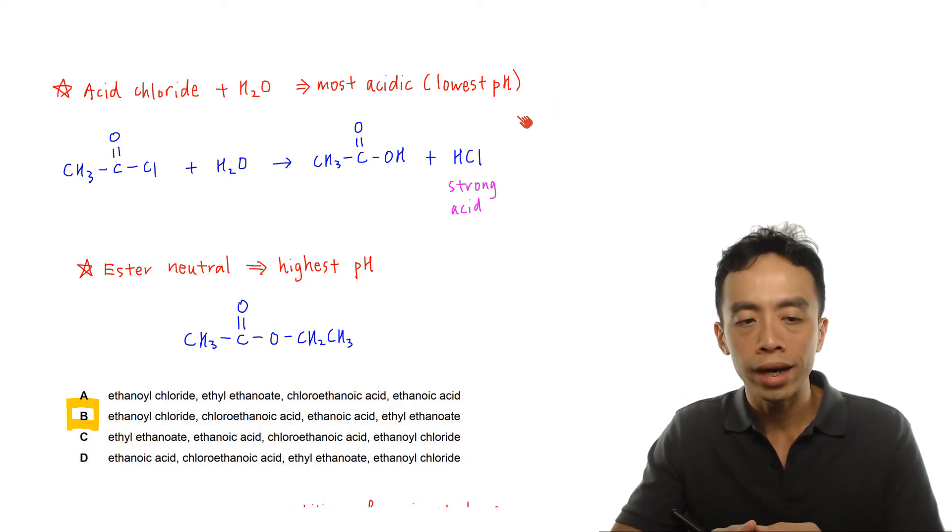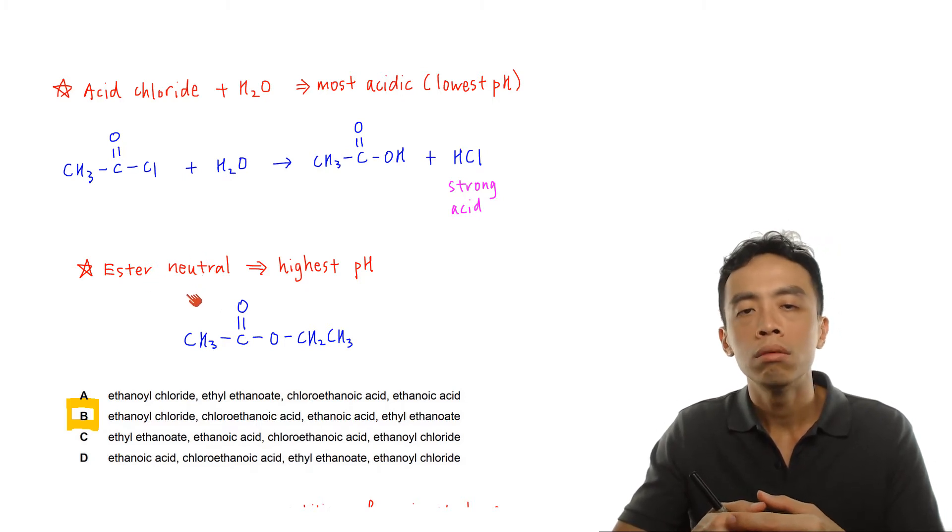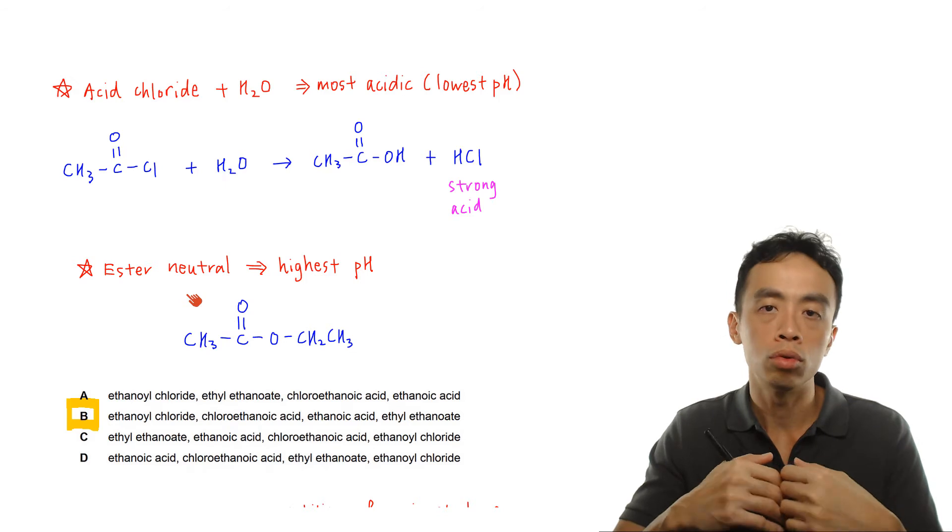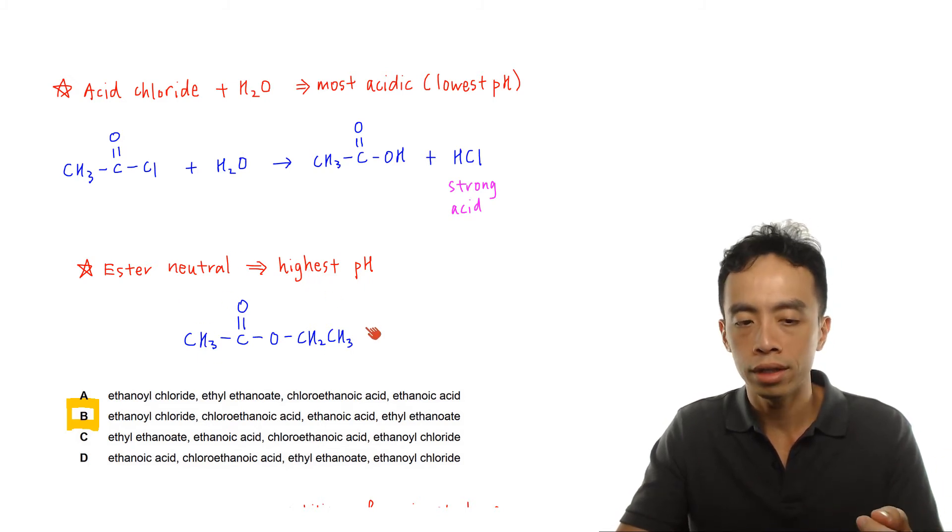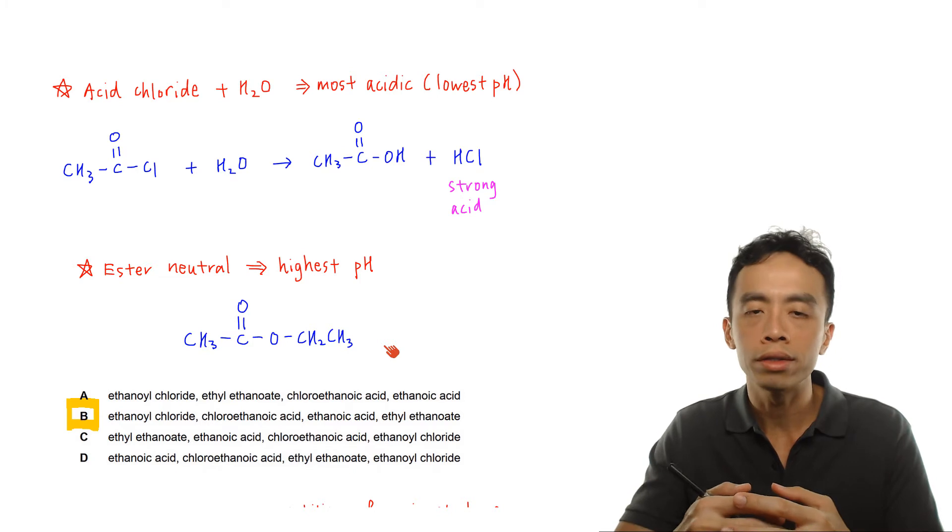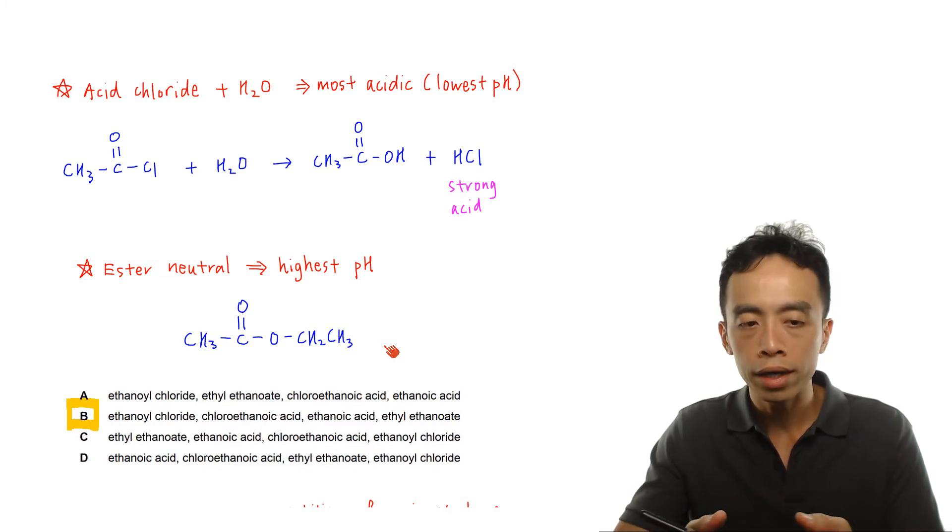How about esters? Esters are considered as neutral because the idea of being an acid is you need to be able to donate H⁺. If I look at the functional group involving ester, we don't have any OH bond present. All the hydrogen in ethyl ethanoate are attached to carbon, so there's no capacity for ester to donate H⁺. We treat this as neutral.